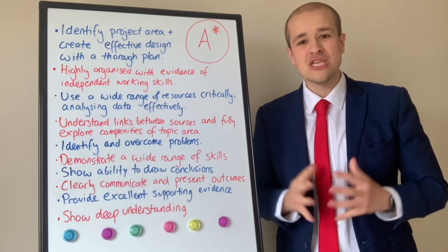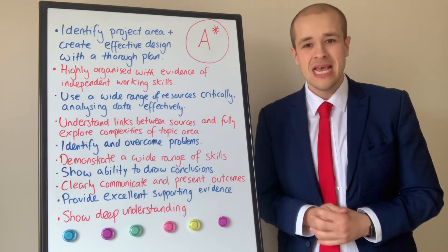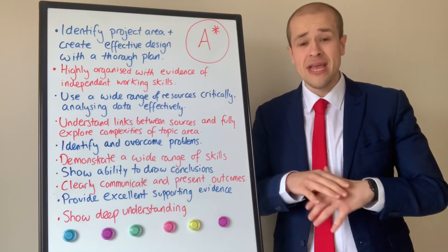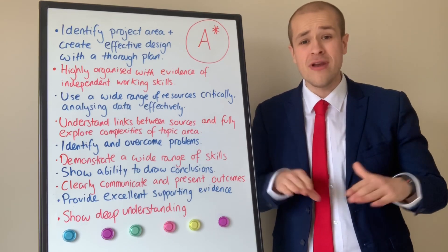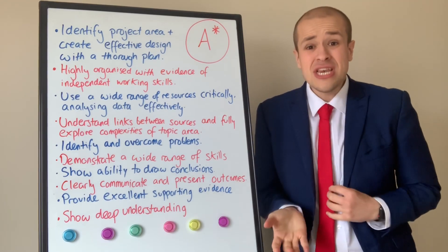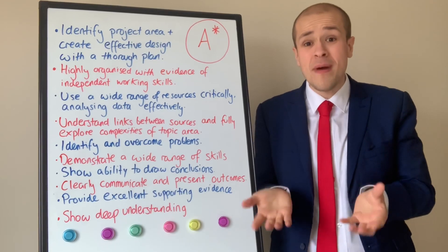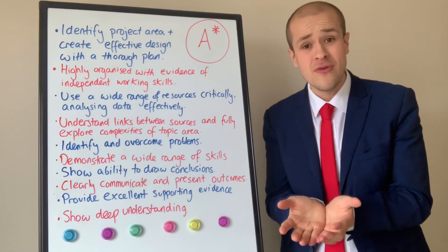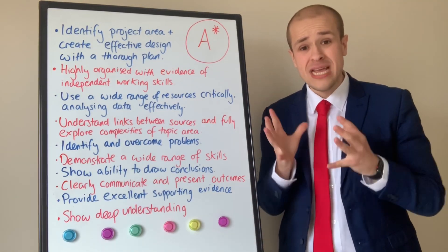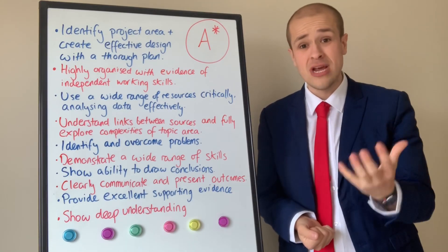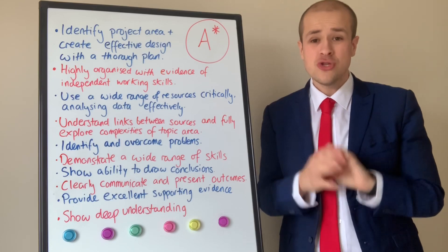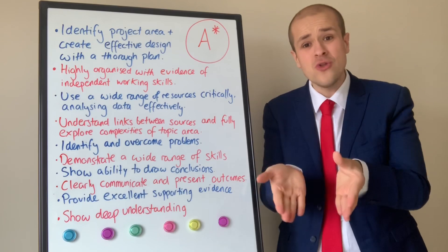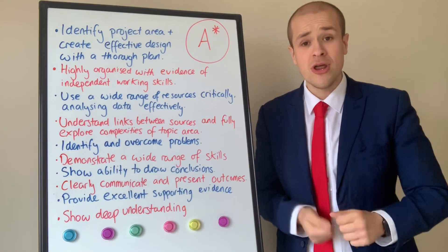One of the easiest ways to gain AO3 develop and realise marks is to show that you have the ability to identify and overcome problems. Some students try to gloss over or paper over cracks and don't admit to any weaknesses. Actually the EPQ process is all about making mistakes and learning from them. By showing independent decision-making skills and addressing problems you'll gain a really significant amount of marks, so don't be afraid to front up your weaknesses and limitations and tell AQA what you're going to do to improve.